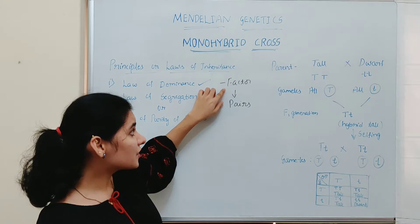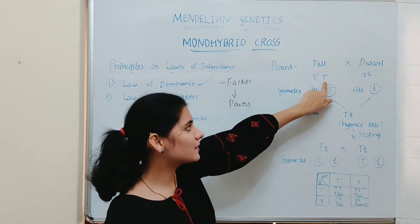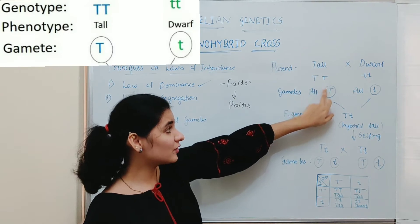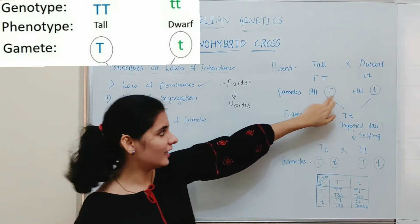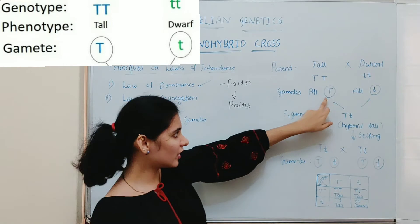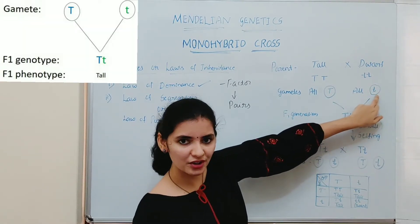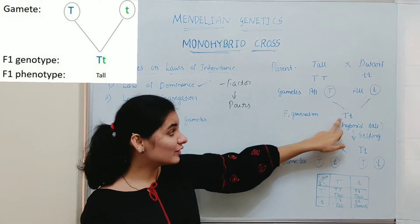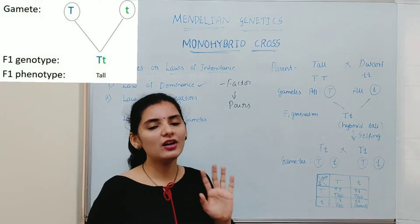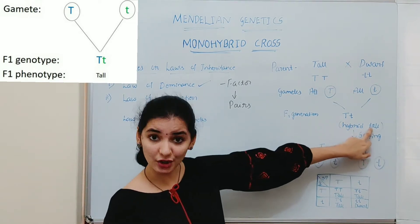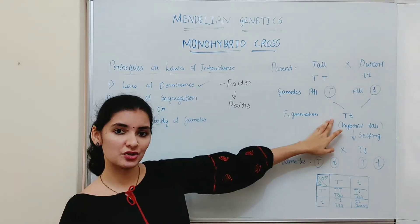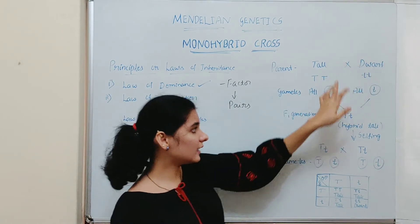According to Mendel, factors are always present in pairs. The tall plant has both capital T and capital T, so it can produce gametes only with capital T. The dwarf plant with small t and small t can produce gametes only with small t. When you combine the gamete with capital T with the gamete with small t, you will get an F1 generation plant with the genotype capital T and small t. Mendel in the F1 generation got all tall plants — phenotypically these plants were tall. That was the first question Mendel had: why only the tall character reappeared in the F1 generation, or why the dwarf character did not reappear in the F1 generation.